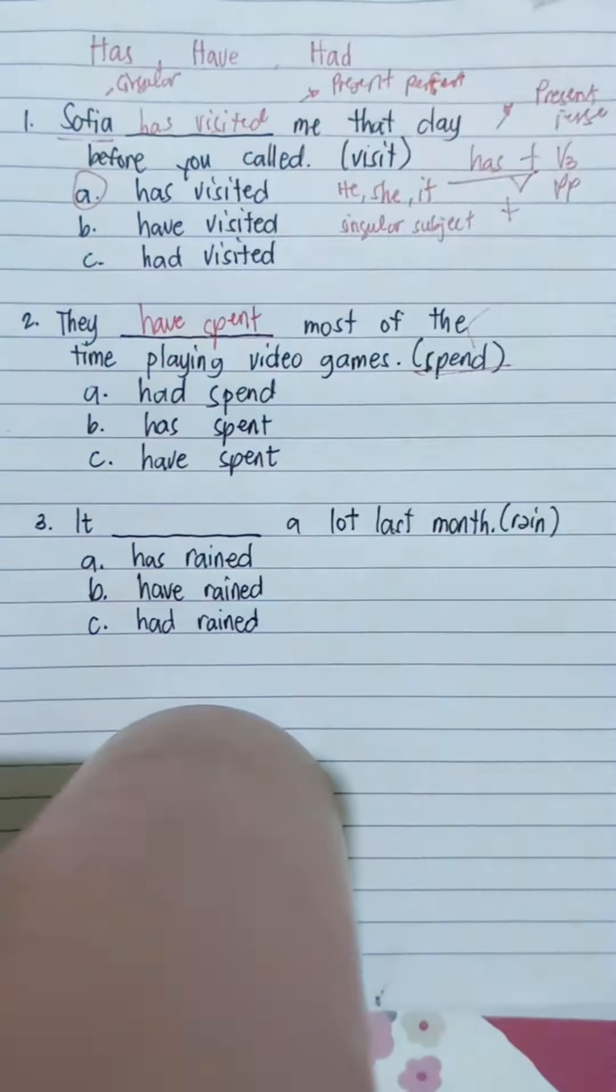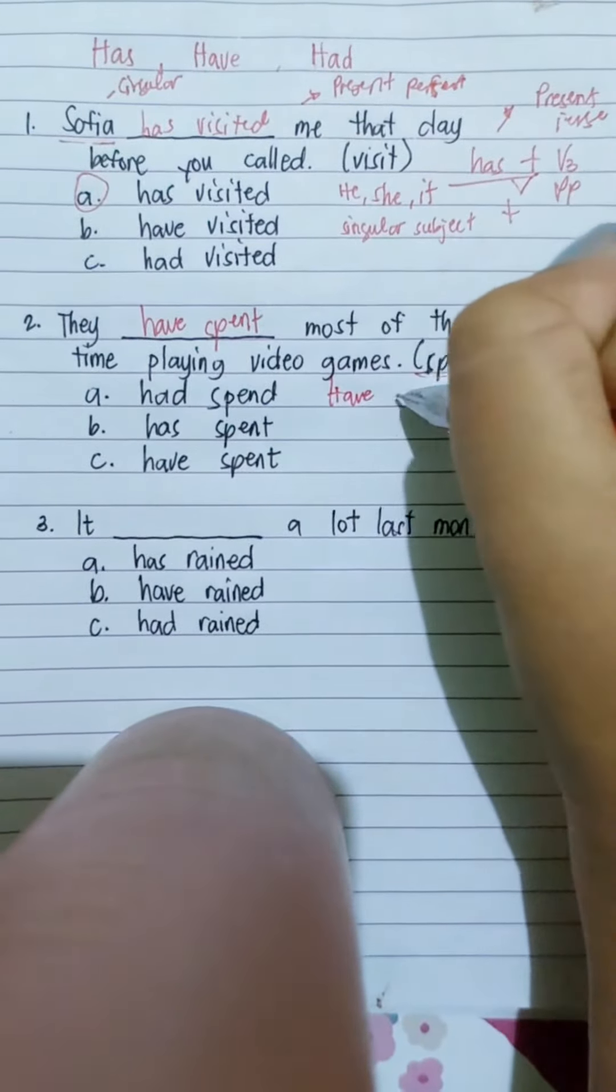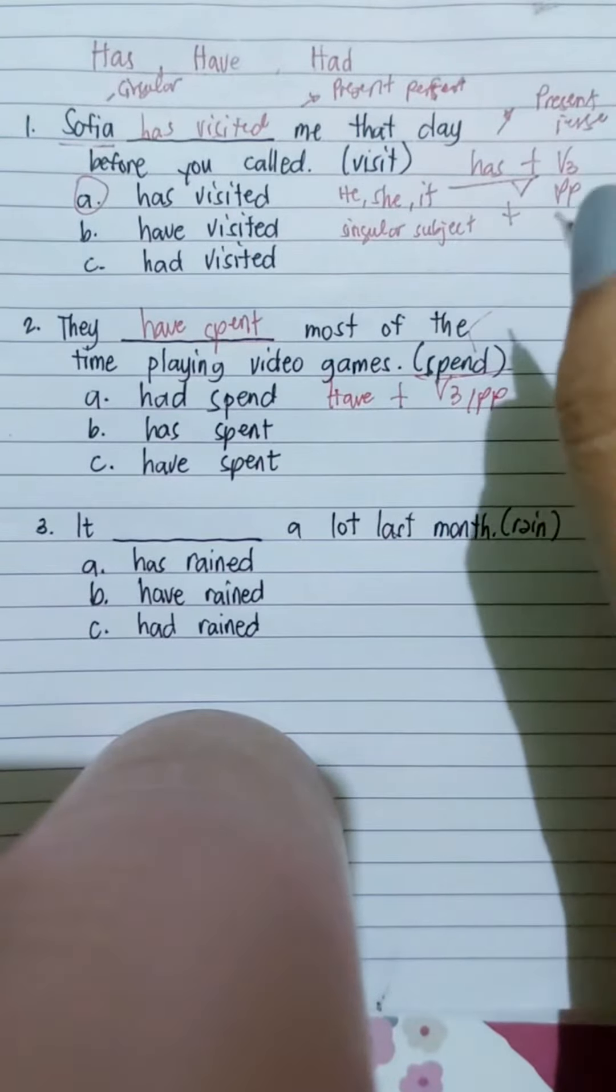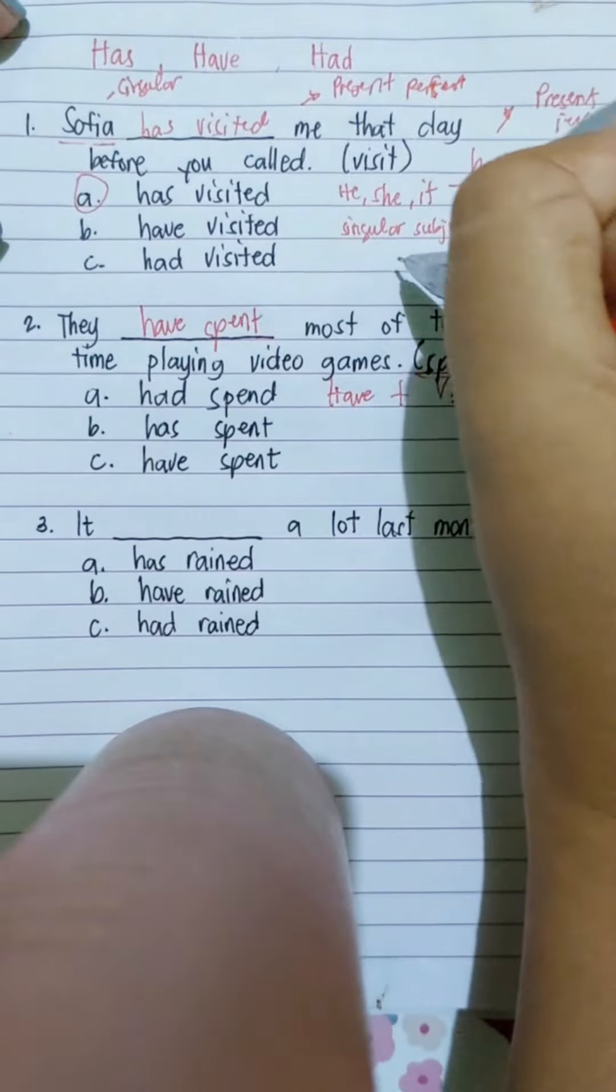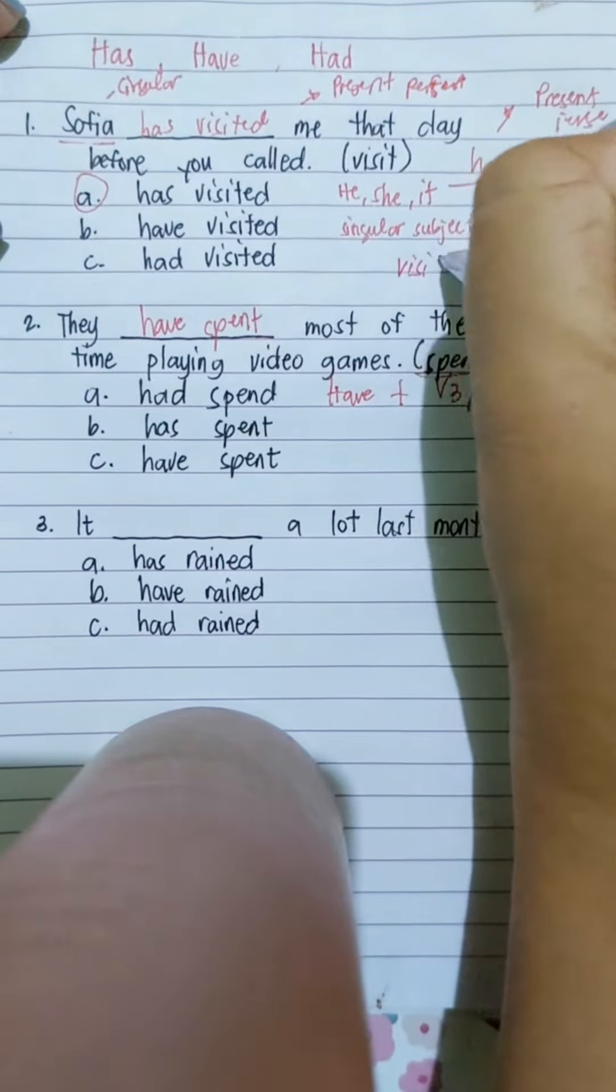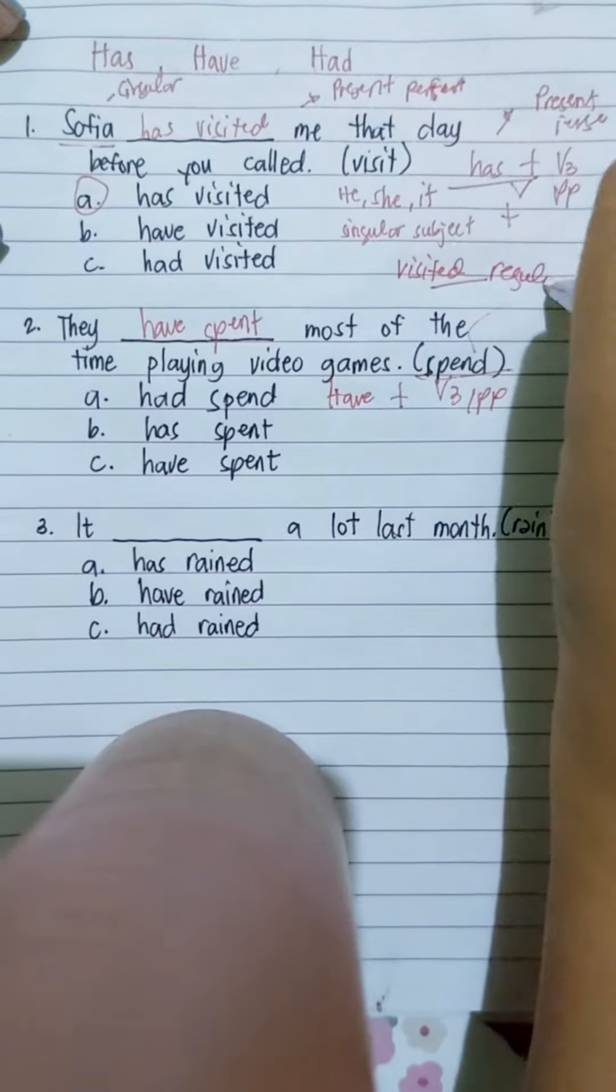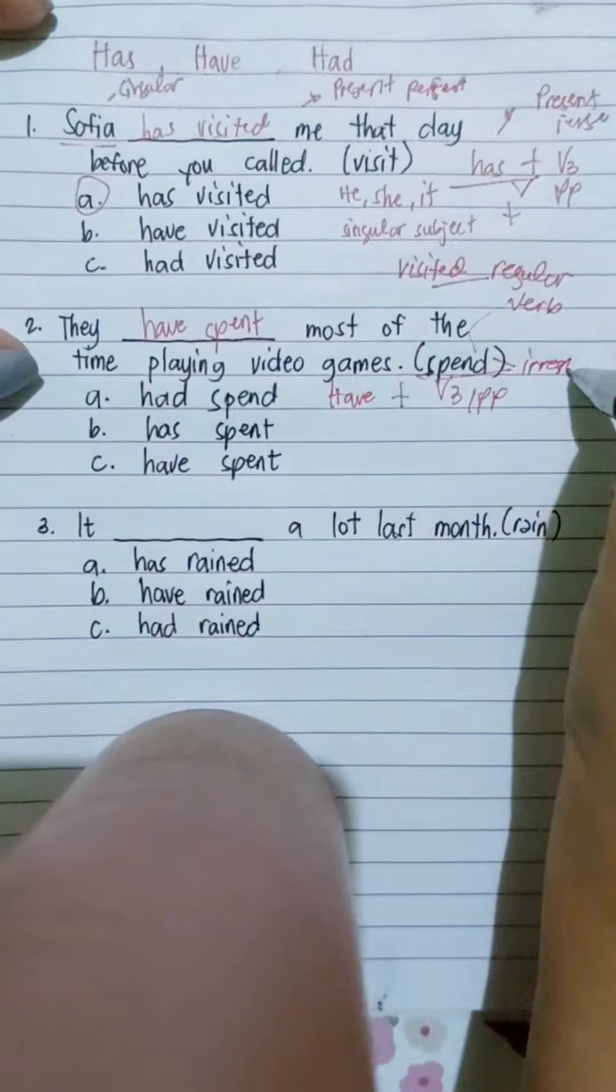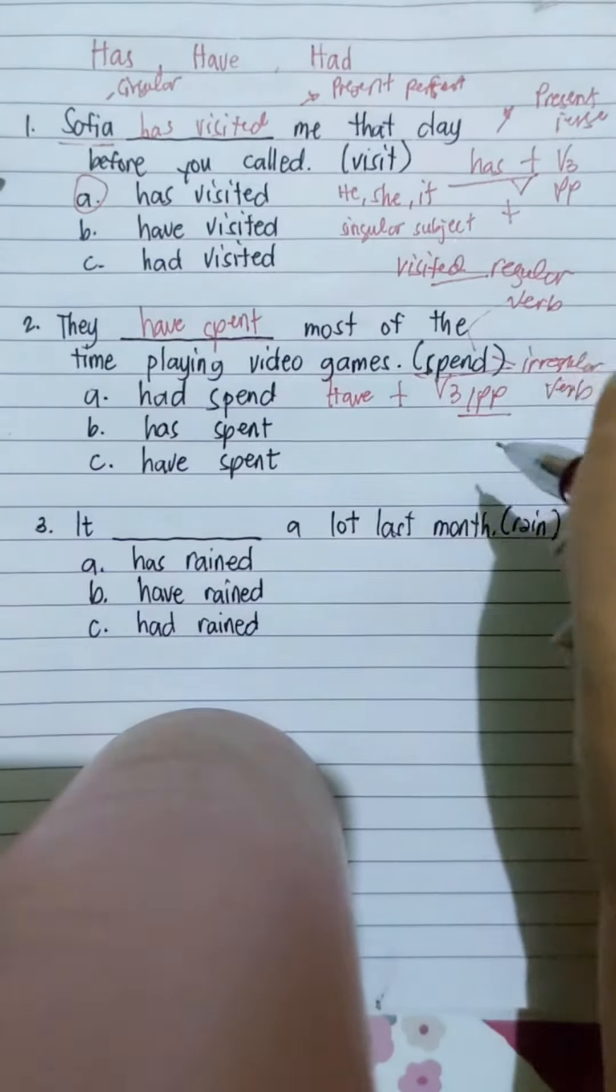Very good, that's have spent. We use have plus followed by the V3 of the verb, or the past participle of the verb. So earlier in the first sentence we used visited. We normally add -ed for regular verbs. However, since spent is a regular verb, it does not follow the form. Last participle of the verb is spent.